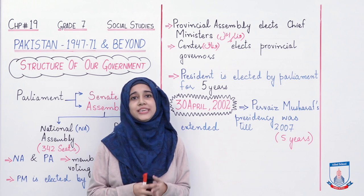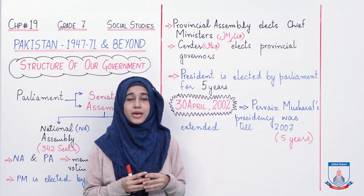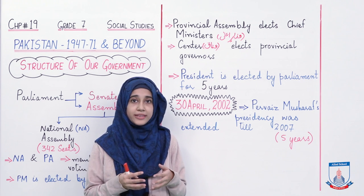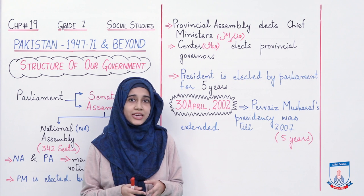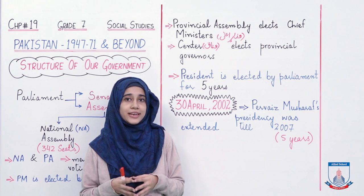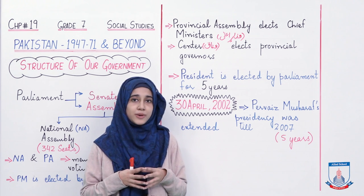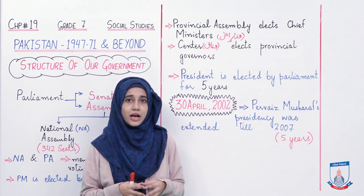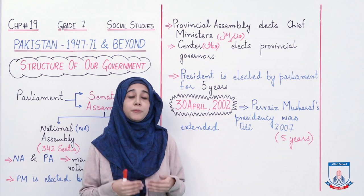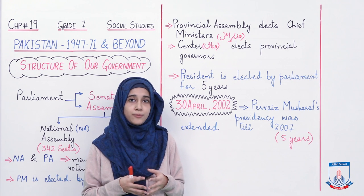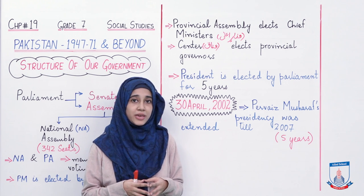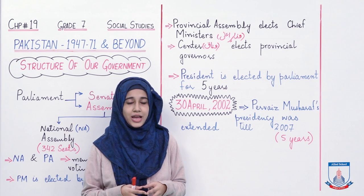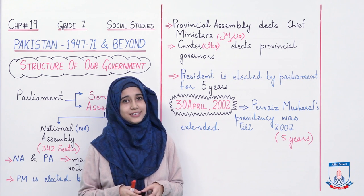Toh bacho, aaj ke liye itna hi. Is lecture mein mein ne aapko basically ek structure samjhaya ke hamari government kaam kis tarha karti hai, kis tarha different log elect ho kar hamari government mein aate hain aur woh humein represent karte hain aur hamare liye kaam karte hain. Agli lecture mein phir se hum padhenge ke hamare mulk ke first 25 years mein koun koun se ups and downs hain. Apna bohat sa khiyal rakhiyega. Allah hafiz.